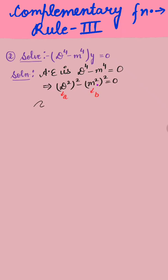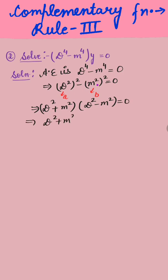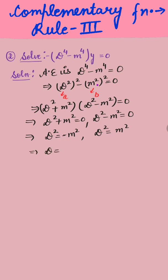We apply the difference of squares formula a² - b² = (a + b)(a - b), where a = D² and b = m². So (D² + m²)(D² - m²) = 0. This gives D² + m² = 0 and D² - m² = 0. From these: D² = -m², so D = ±mi, and D² = m², so D = ±m.